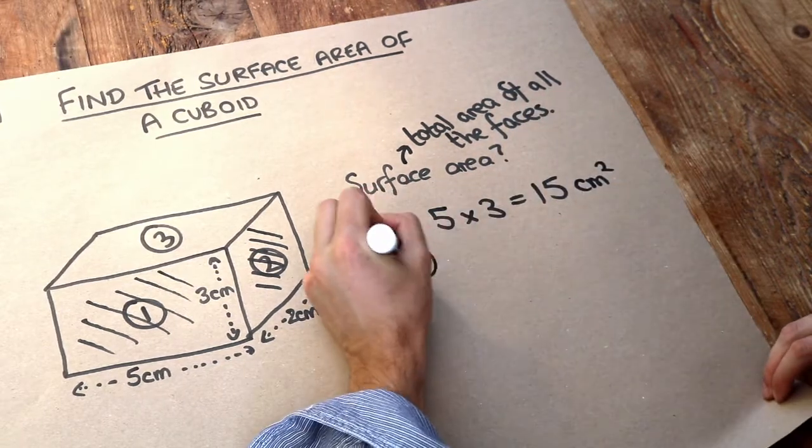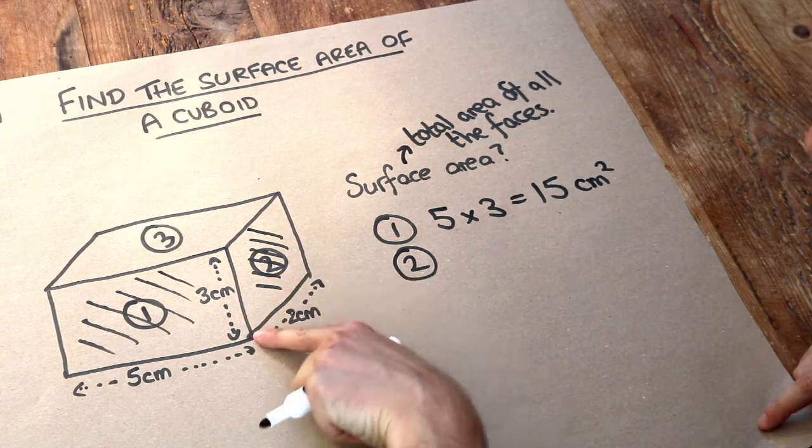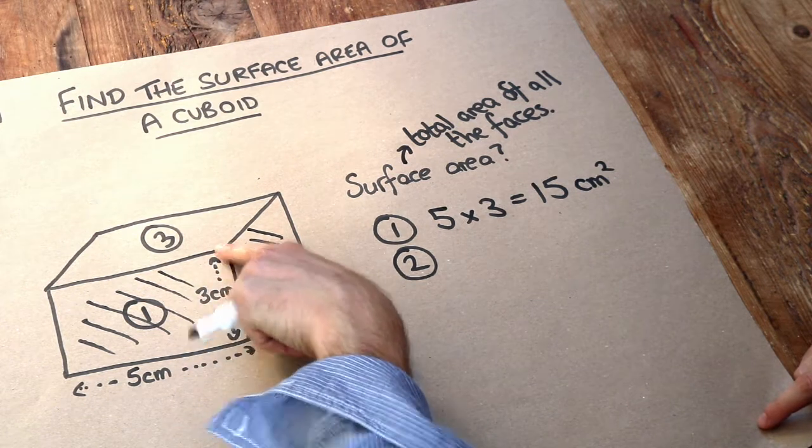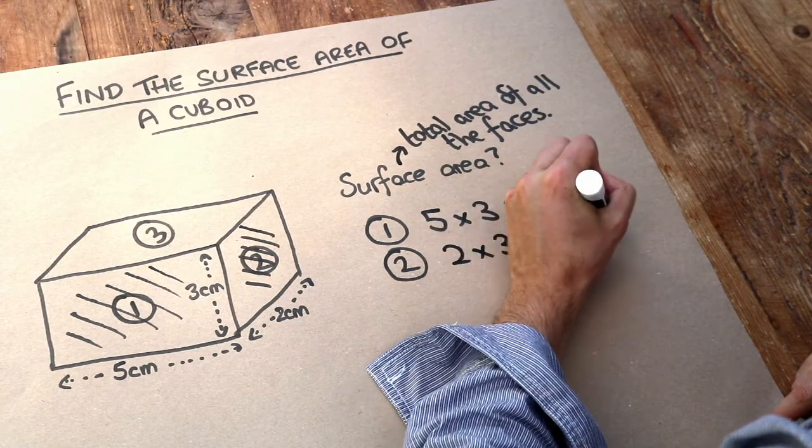What about face 2? Well we can see that the length here is 2 and the height here is 3. We've got a 2 by 3 rectangle. 2 times 3 is equal to 6 centimetres squared.